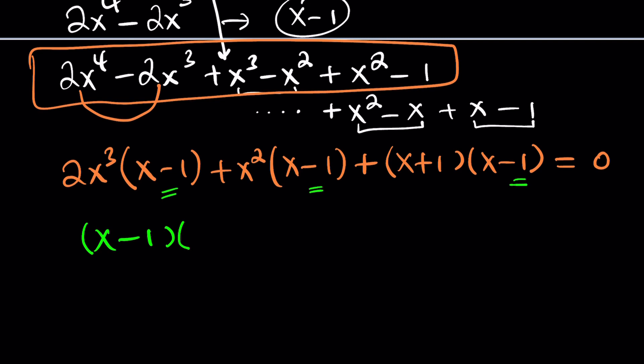So once you factor out x minus 1, you're going to get 2x cubed plus x squared plus x plus 1. Maybe I should use a different notation for that. And the whole thing is equal to 0. Obviously, this gives us x equals 1, which we already knew.